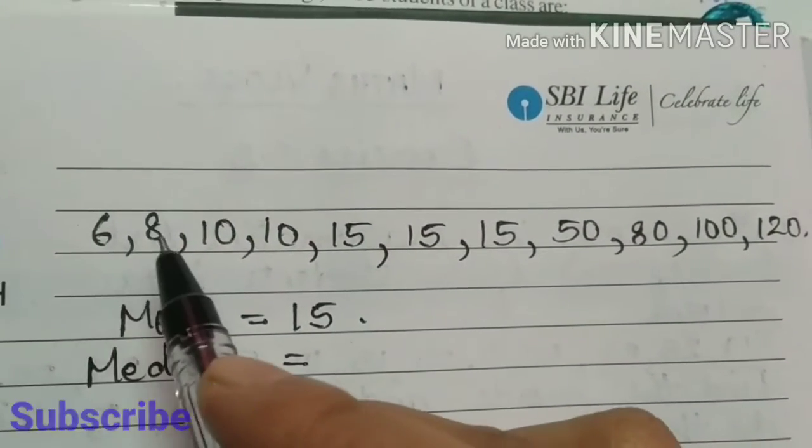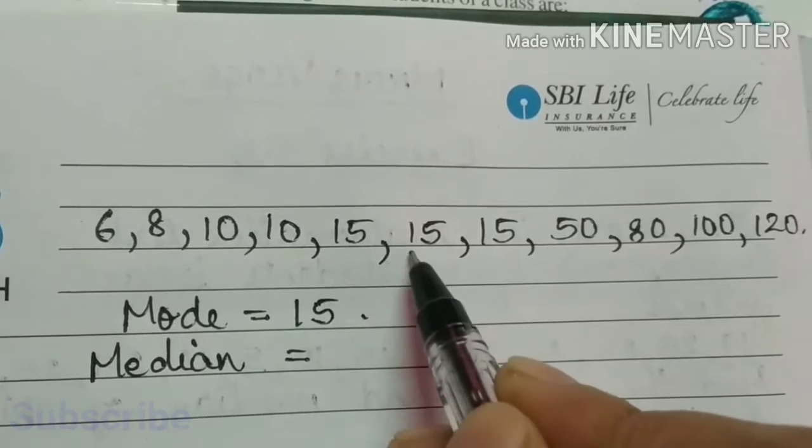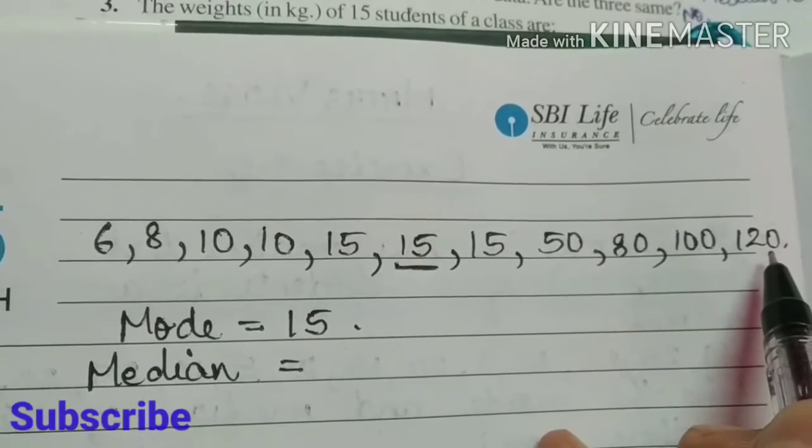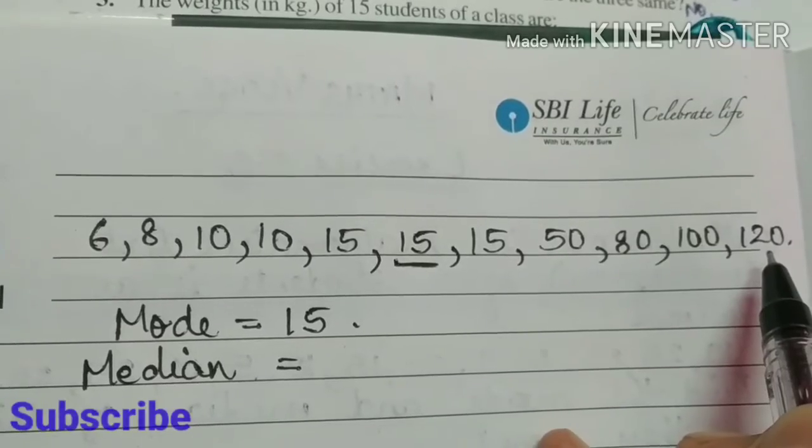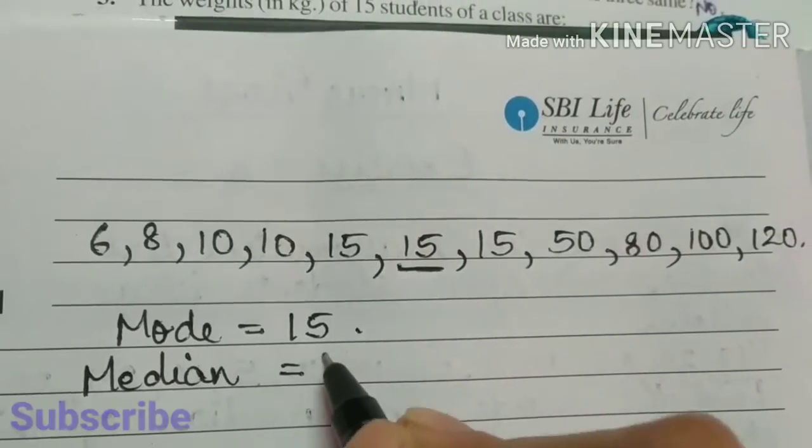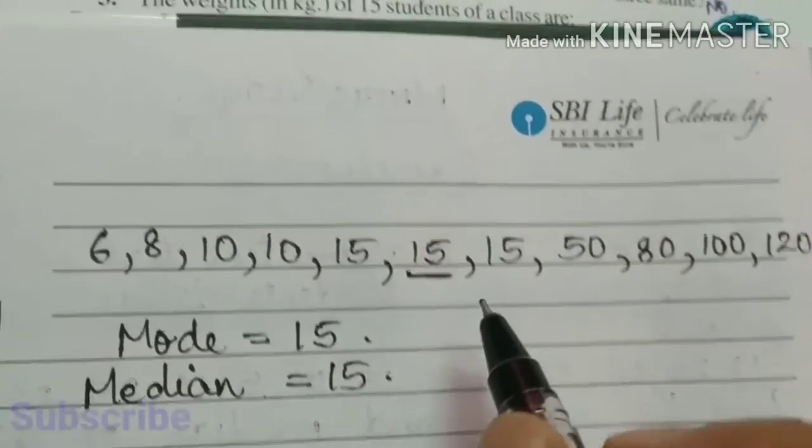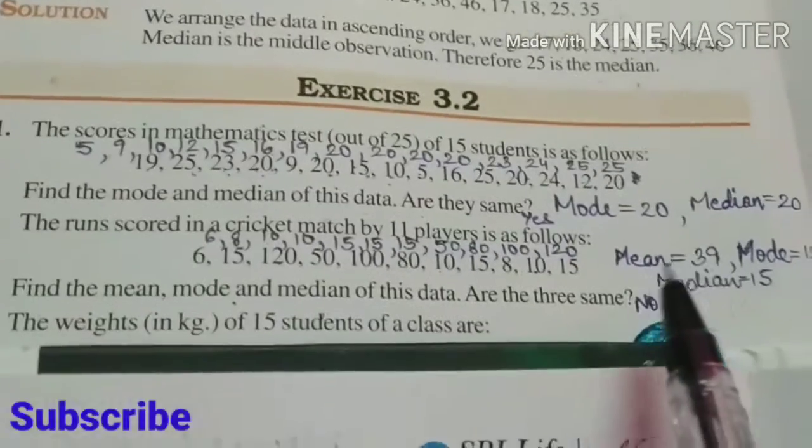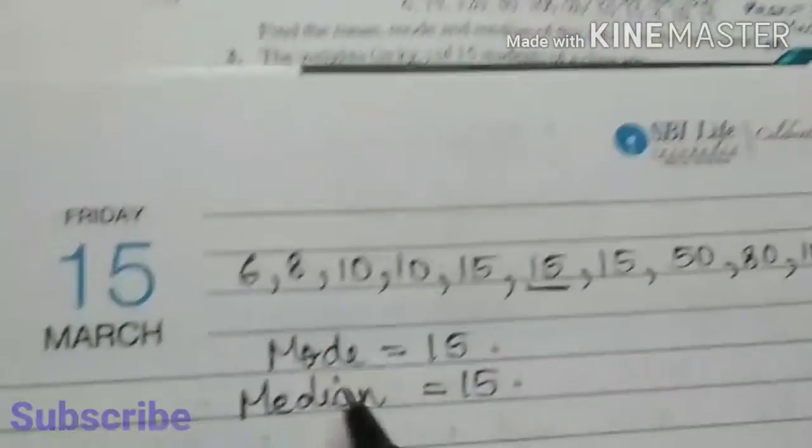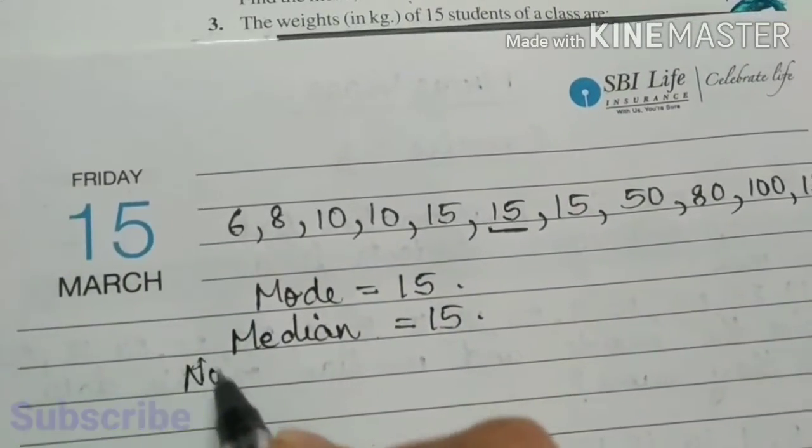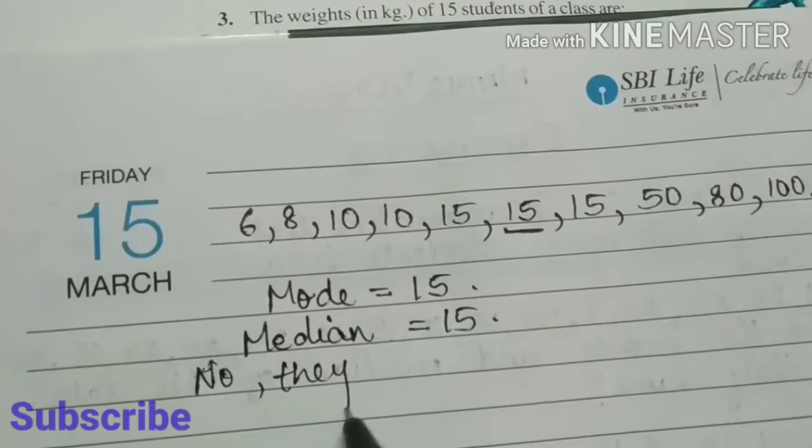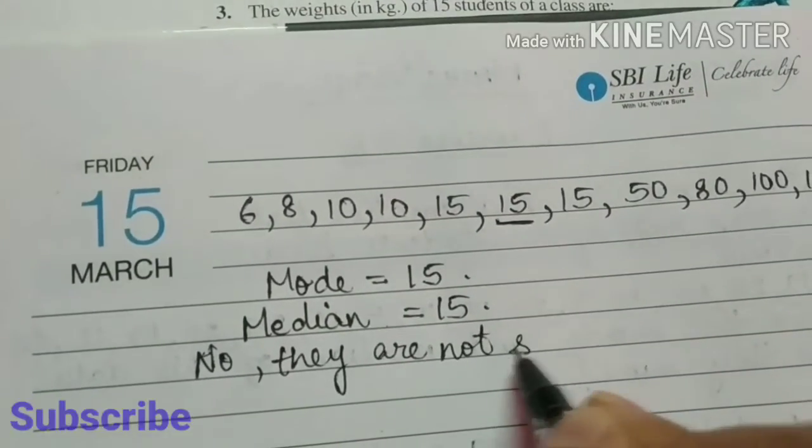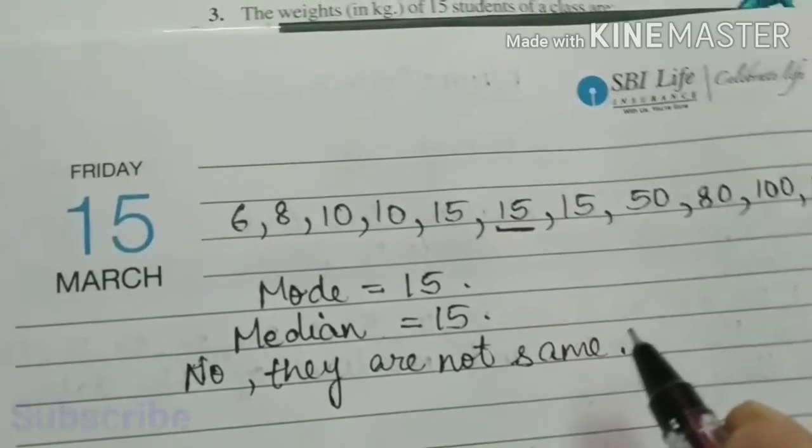Now we have to find median. Median here, 11 observations, so the middle one will be the median. 1, 2, 3, 4, 5, and 6th one. Here also five observations remaining, so median is also 15. So are the three same? No, because mean is 39, so answer is no, they are not same. So this question is finished.